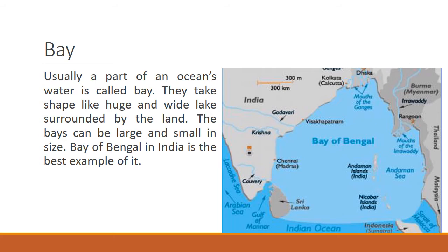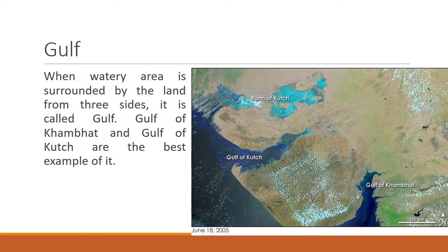The first water body is a bay. A bay is usually a part of an ocean's water that takes the shape of a huge, wide lake surrounded by land. Bays can be large or small in size. The Bay of Bengal in India is the best example. On the map, the light shade of blue shows the Bay of Bengal, which joins the Indian Ocean. This region of water surrounded by land, not as deep as an ocean, is known as a bay.